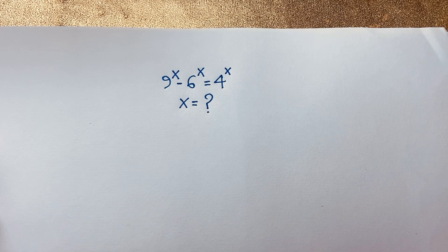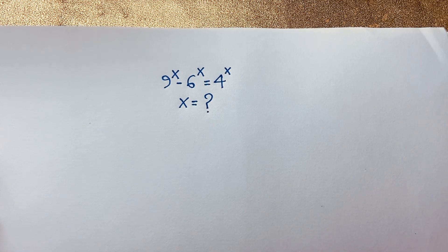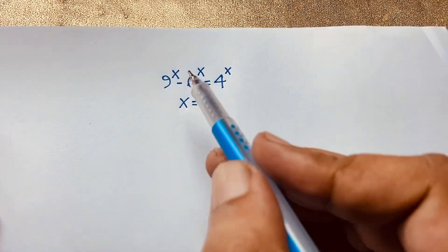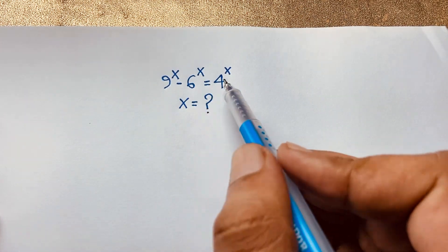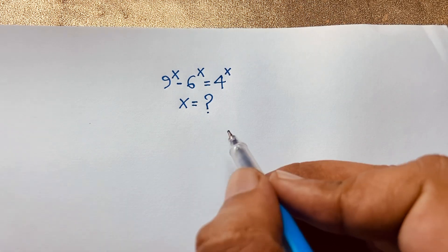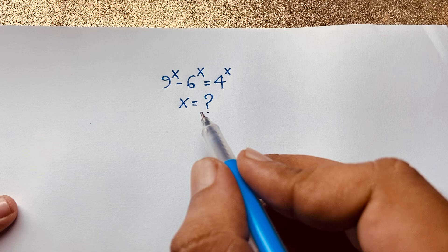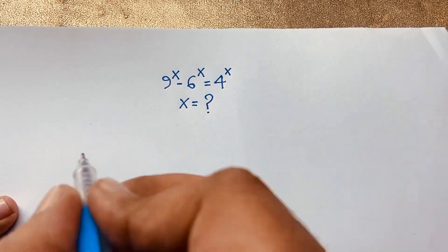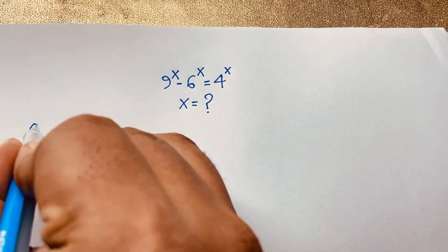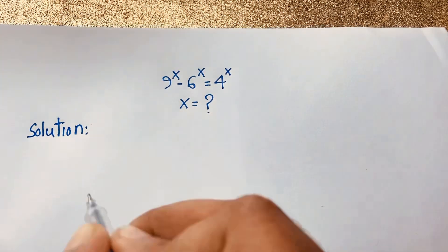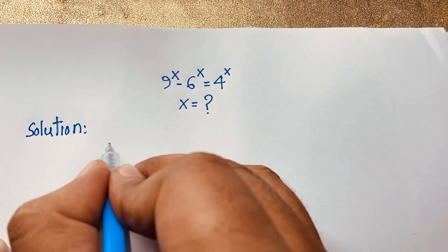Hello everyone, welcome to Russell's classroom. Today we are solving a nice Math Olympiad question. This question is: 9 to the power x minus 6 to the power x is equal to 4 to the power x. What is x? How to solve this exponential Math Olympiad question?